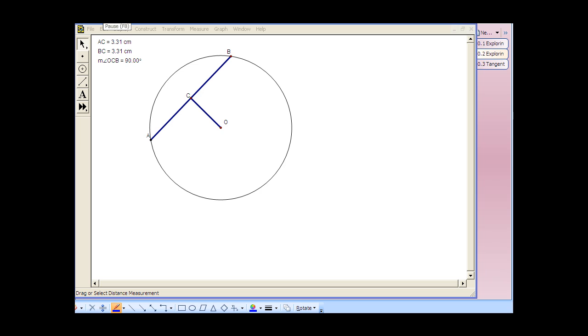If we look at this example now in Geometer Sketchpad, once again I have my circle, and we have chord AB, center O, and C is the midpoint of AB, and CO happens to meet AB at a right angle.